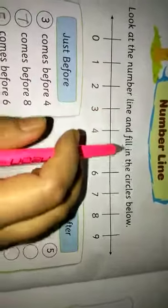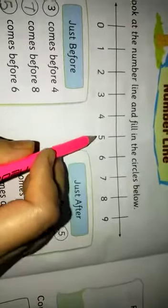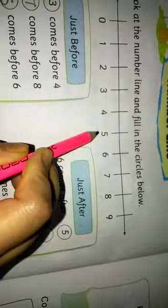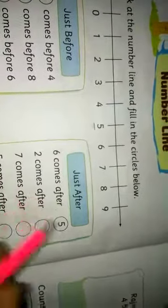This is a number line, page number 48. Look at the number line and fill in the circle below. Just after: 6 comes after 5, 2 comes after 1, 2 comes after 1.